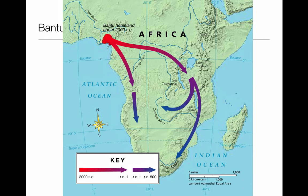Here is a map to illustrate this. Nubia and Egypt are in the top right-hand corner of the screen. The Bantu started somewhere near modern-day Benin and spread throughout Central and Southern Africa in that direction. If you have any questions, let me know — otherwise I'll catch you on the flip side.